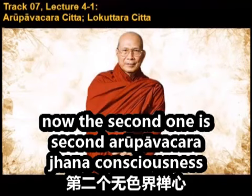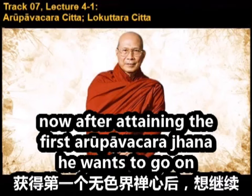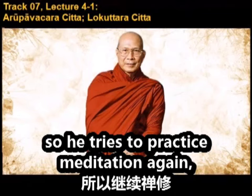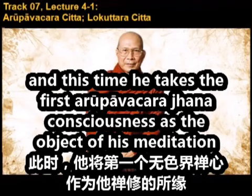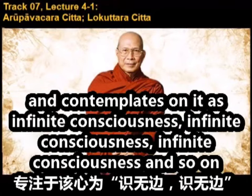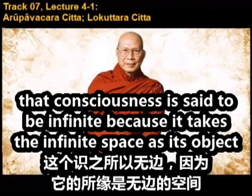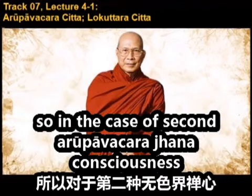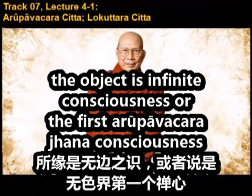The second arūpāvacara jhāna consciousness: after attaining the first, he wants to go on. He takes the first arūpāvacara jhāna consciousness as the object of his meditation and contemplates it as 'infinite consciousness, infinite consciousness.' That consciousness is said to be infinite because it takes infinite space as object. So in the second arūpa jhāna, the object is the first arūpāvacara jhāna consciousness, called 'infinite consciousness.'